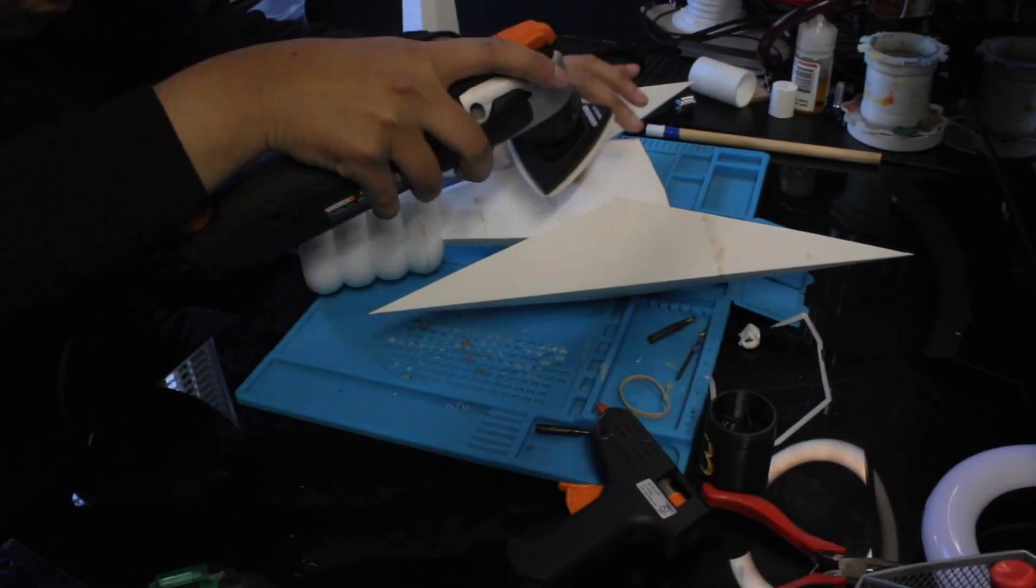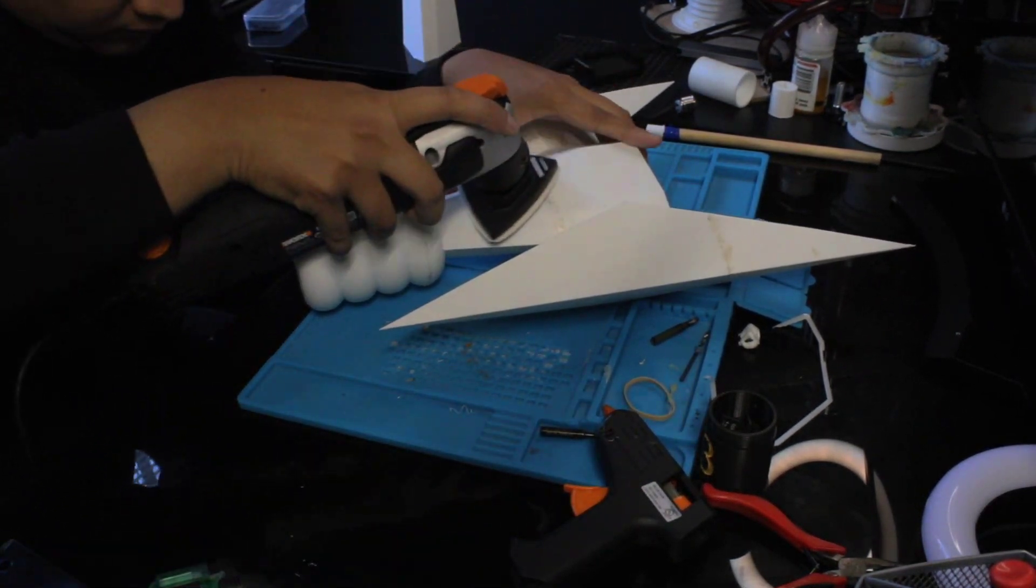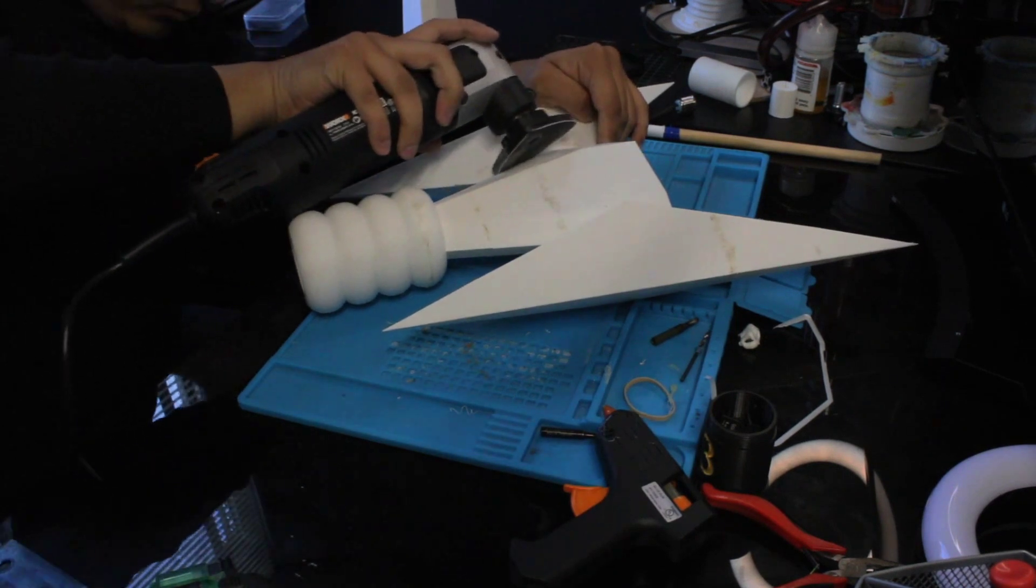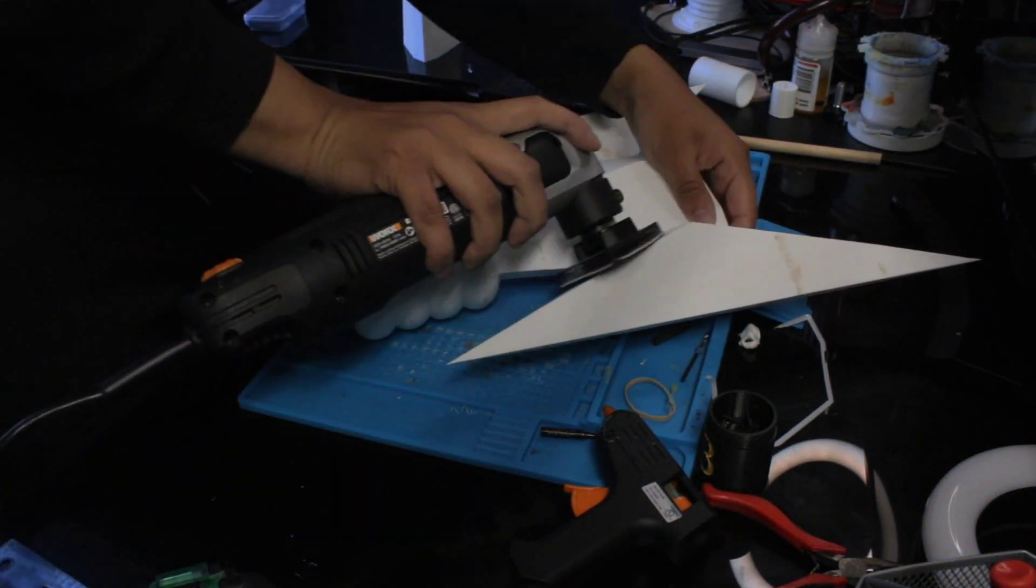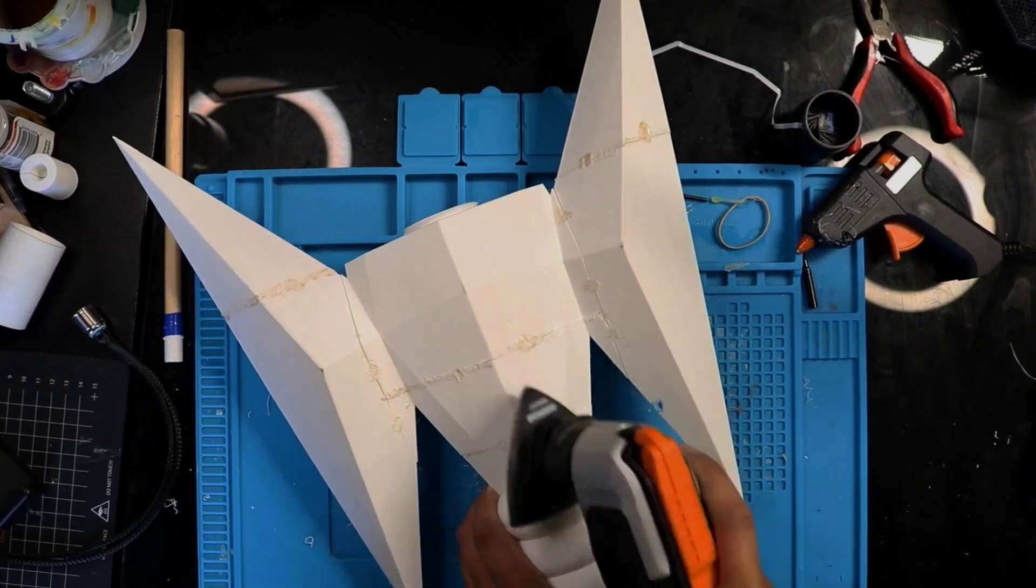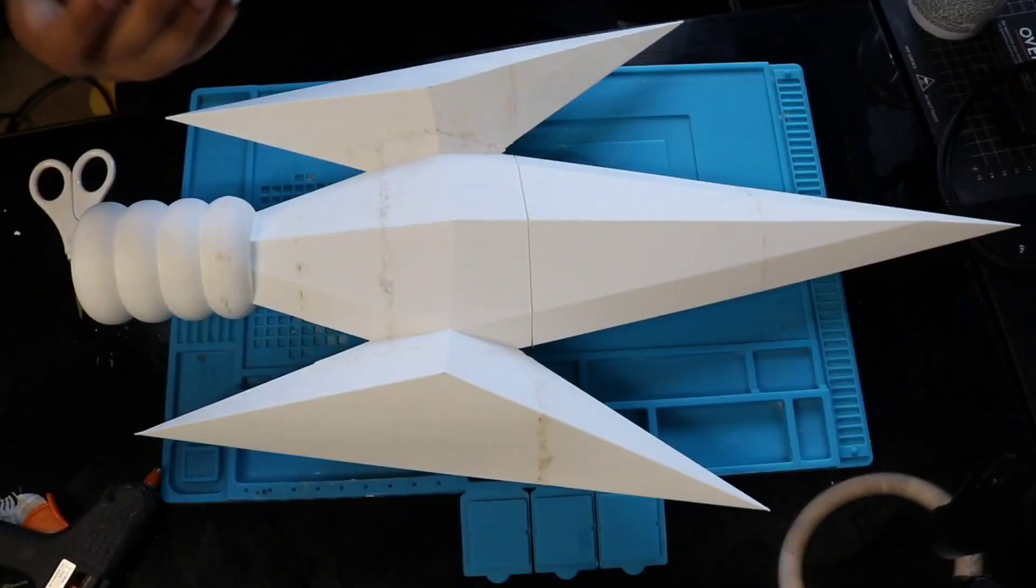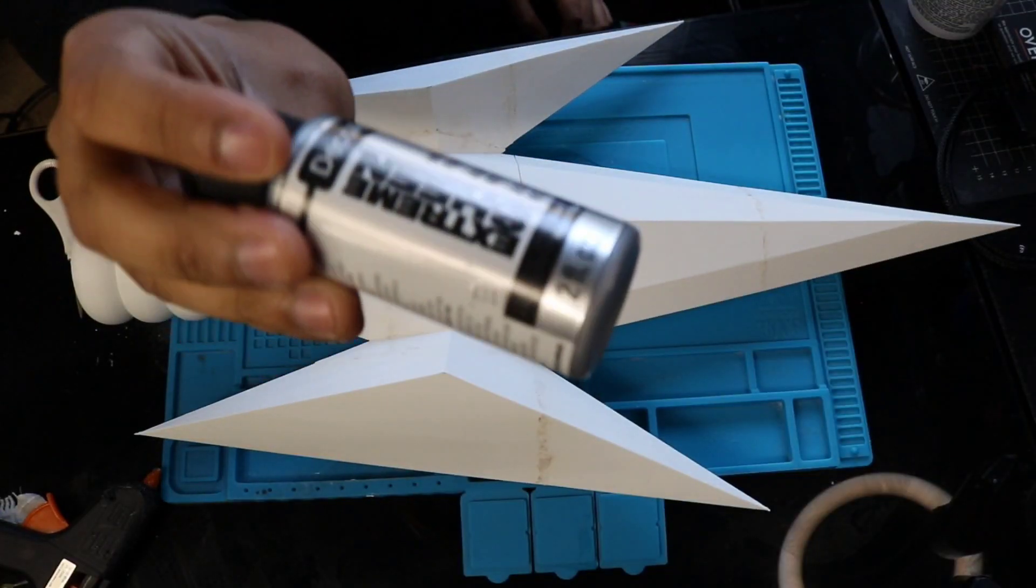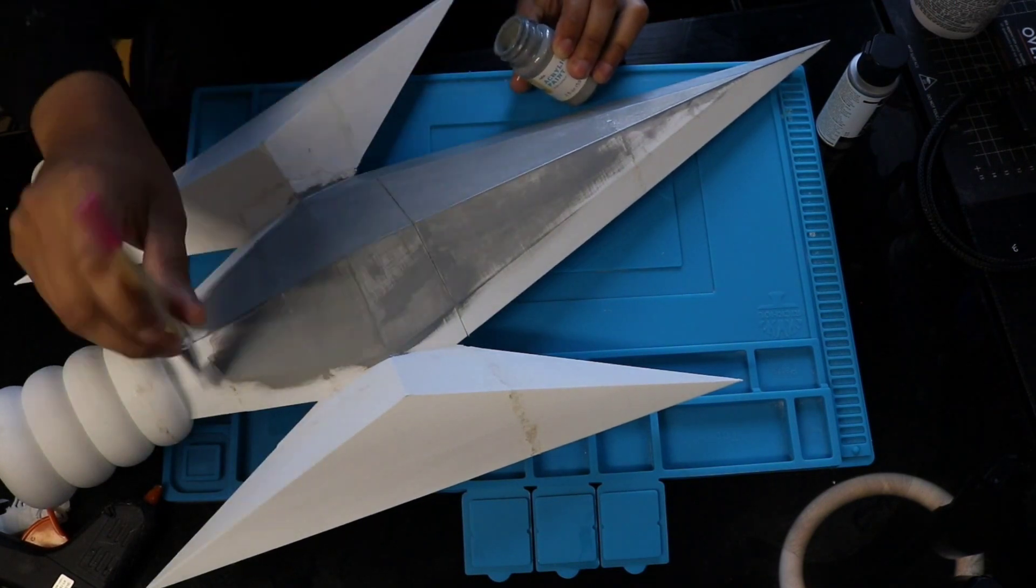Once you put all that filler in, you have to sand it. Make sure everything is smooth. This is the step that you're going to have to take more time. I only did it once and you're going to see at the end how bad it looks. But take your time. I'll recommend three times: sand it and paint, prime it, and then sand it again just to make sure that all the parts look great.